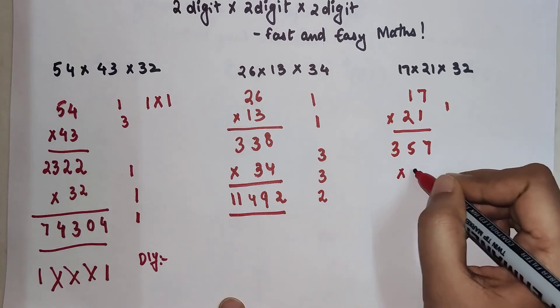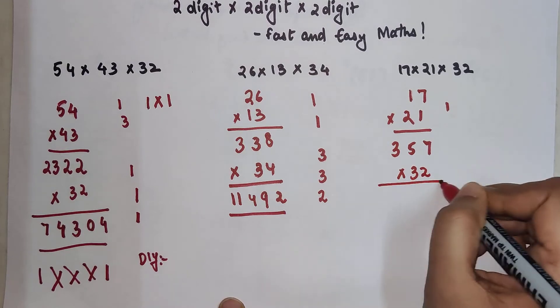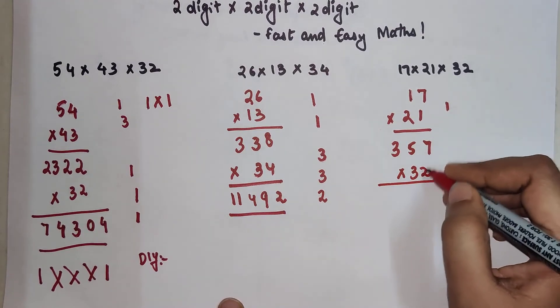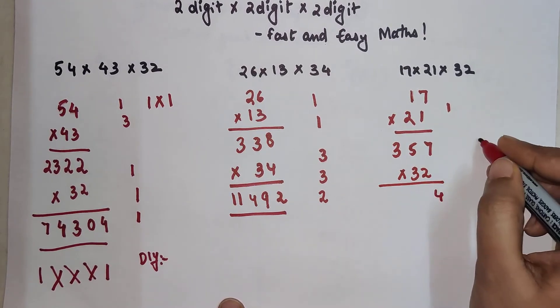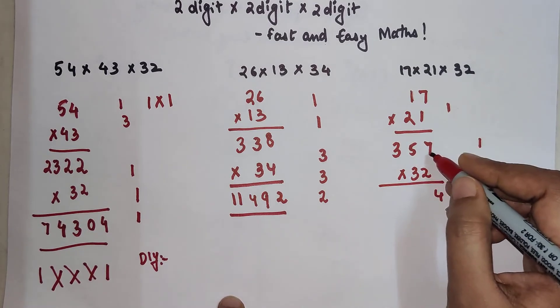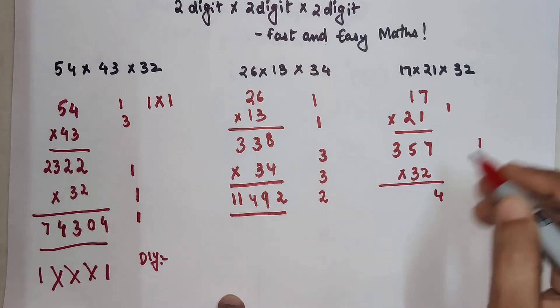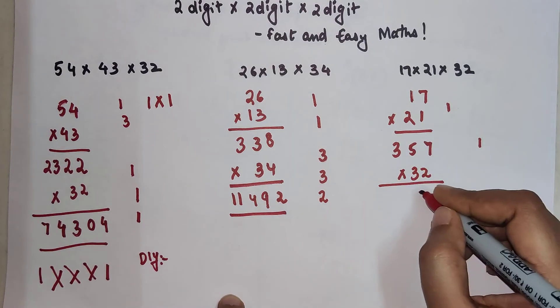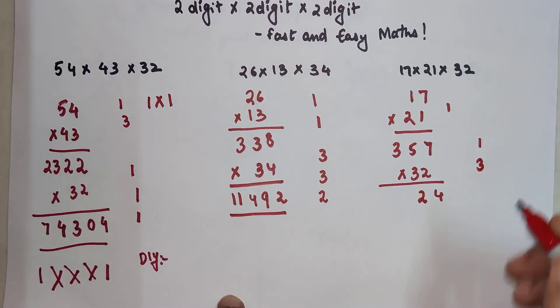Now this has to get multiplied by 32. Very nicely. Please see this. So 2 into 7 gets you 14. We are left with 1. Then 5 into 2 is 10. 3 into 7 is 21. So 10 plus 21 gets you 31. Plus 1 gets you 32. So 3 is carried.